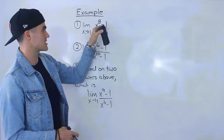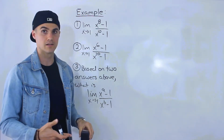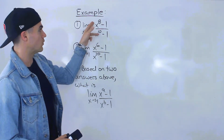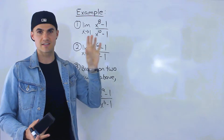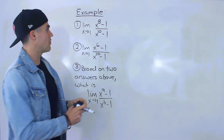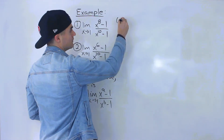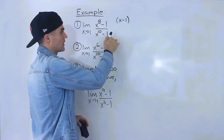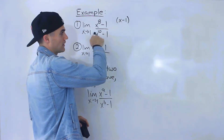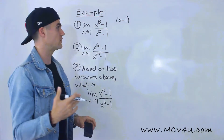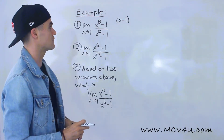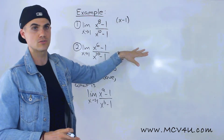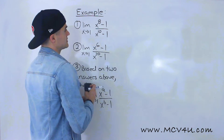We have the limit as x approaches 1 of x to the power 8 minus 1, over x to the power 10 minus 1. Notice that we can't do direct substitution because if we sub in 1 we'll have 0 over 0, which is undefined. But because we have that 0 over 0 result, we know that x minus 1 is a factor for both the numerator and the denominator by the factor theorem from advanced functions. So if we factor both and cancel that x minus 1, we can then do a direct substitution.